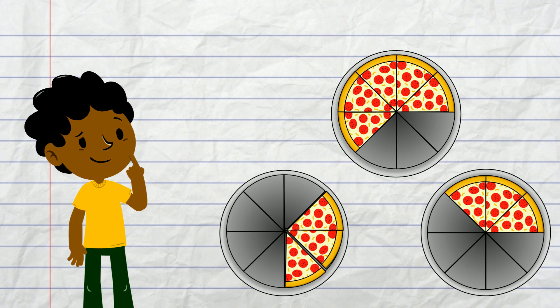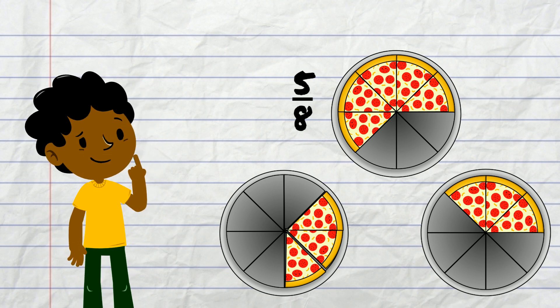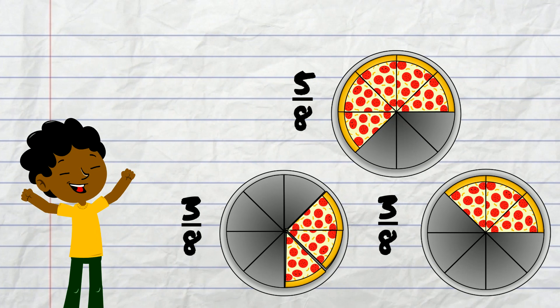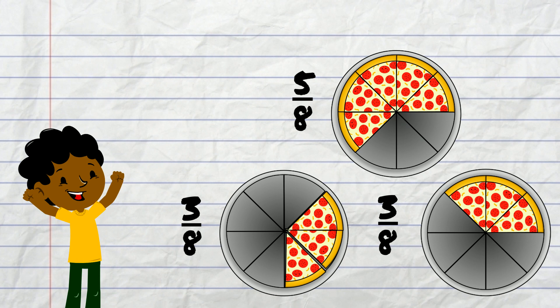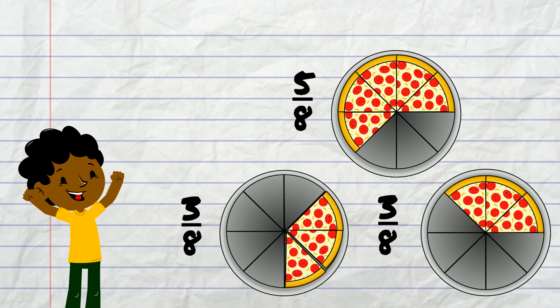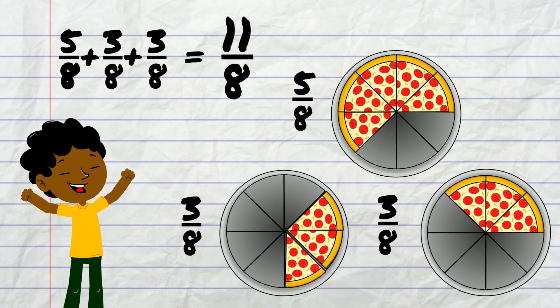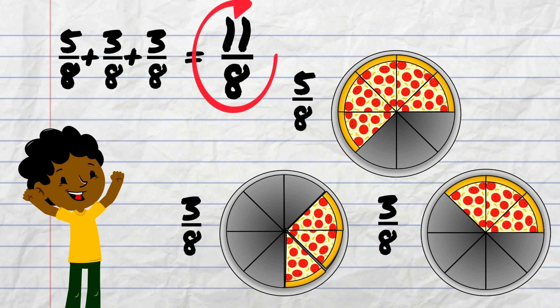One pizza had 5 eighths left, another pizza had 3 eighths left, and the final pizza also had 3 eighths left. Daniel added up the fractions in his notebook: 5 eighths plus 3 eighths plus 3 eighths equals 11 eighths.